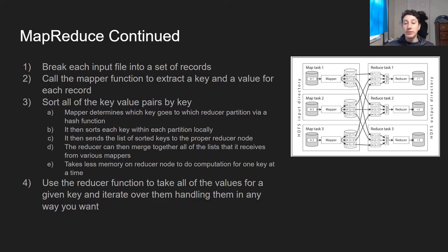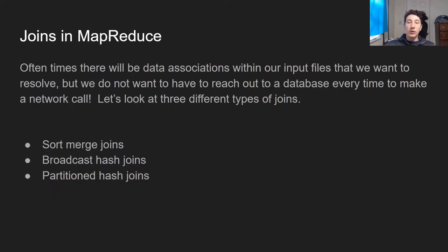The reducer function has all of the values for a given key and can iterate over them and do anything you want. Now, there are also nuances: oftentimes there are data associations between files, and you'll want to perform joins in MapReduce. There are basically three types of joins — sort merge joins, broadcast hash joins, and partitioned hash joins. The general philosophy is to reduce the amount of network calls to a second database or second dataset.